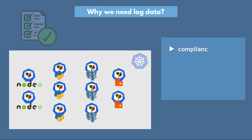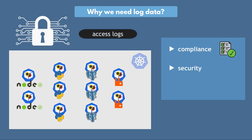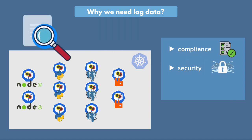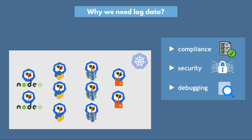This may be some compliance data — for example, if you're required to log some specific information depending on your industry in order to be compliant. It could be for your application security, for example, to detect suspicious requests in your application by logging all access attempts with IP address and user ID, or log who is accessing what and when. And an obvious usage for log data is debugging your application when there is an error, analyzing all application logs to find the cause.